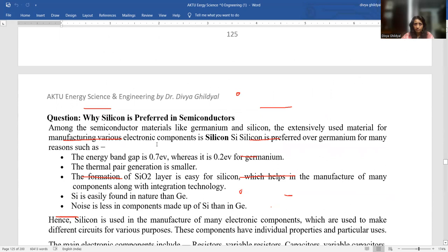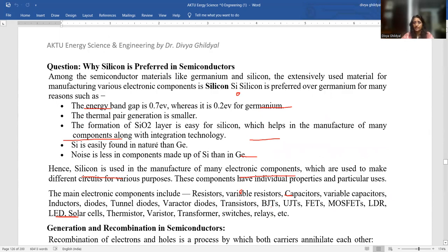Section A question: Why is silicon preferred in semiconductors? Because the energy band gap is 0.7 electron volts, whereas for germanium it is 0.2 electron volts. The thermal pair generation in this case is smaller. The formation of silicon oxide layer is easy for silicon, which helps in the manufacture of many components along with integration technology. Silicon is found easily in nature than germanium. Noise is less in components that are made up of silicon compared to germanium. This was asked in section A, important.